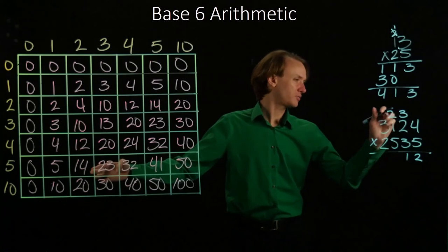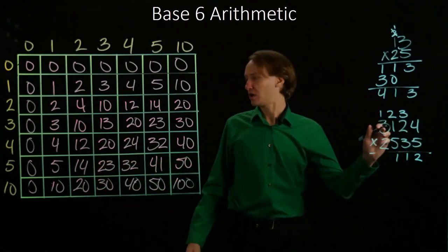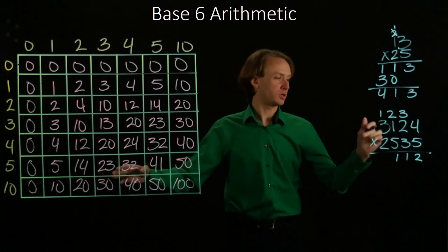5 times 1 is 5, plus 2 is 11. 5 times 3 is 23, plus 1 is 24.